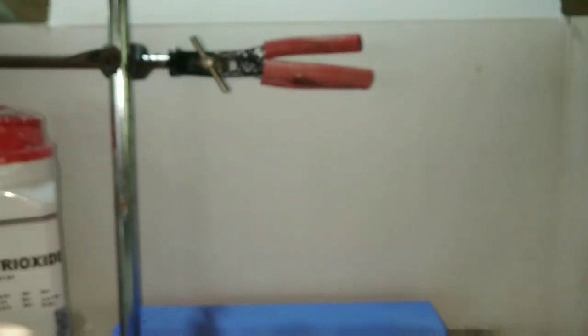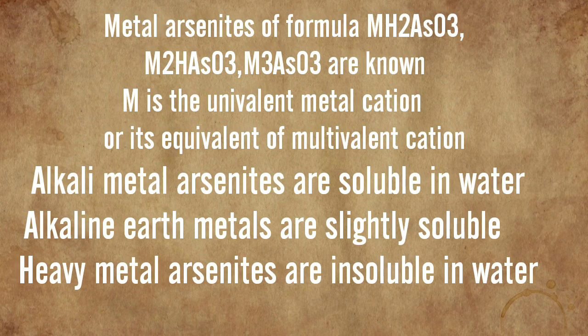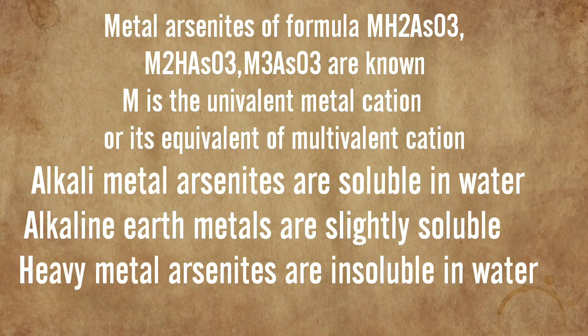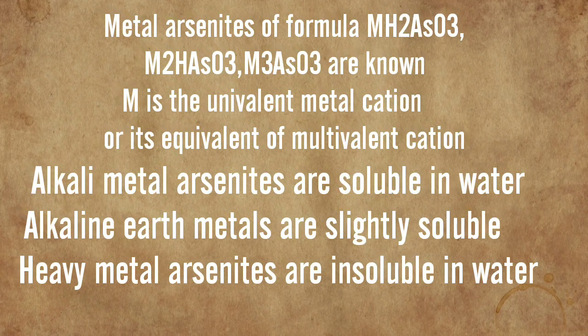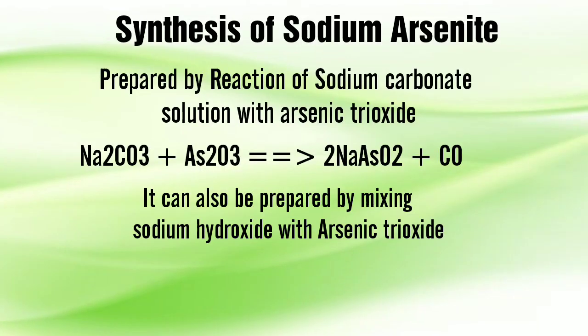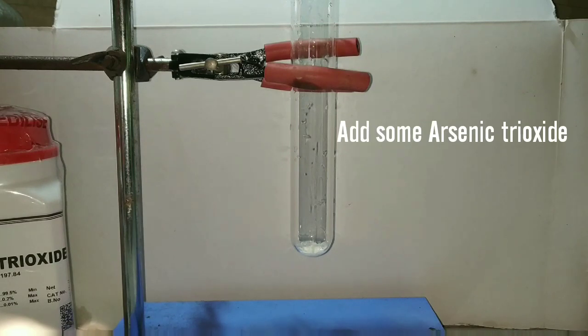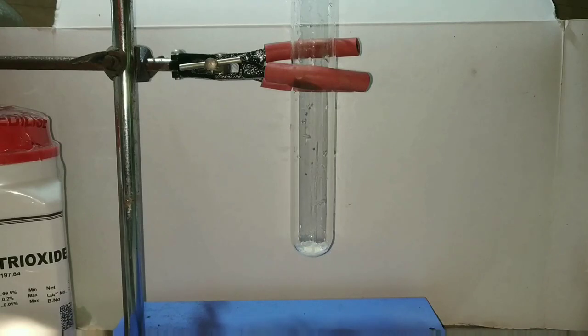Since arsenic is a metalloid, it also forms metal arsenides on reaction with metal hydroxides. Synthesis of sodium arsenite is by the reaction of sodium carbonate with arsenic trioxide. Alternatively it can be prepared by sodium hydroxide instead of carbonate. Step one is to add the arsenic trioxide. Now we will be adding a supersaturated or a concentrated solution of sodium carbonate into it.